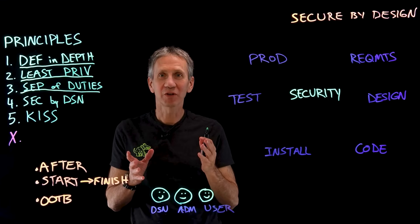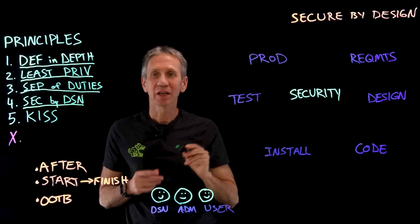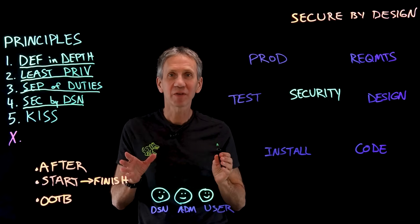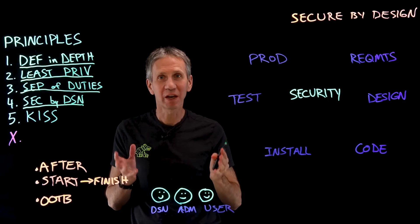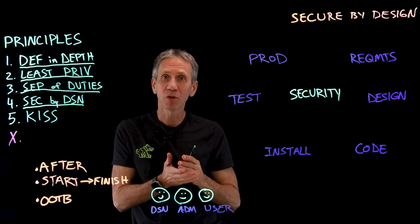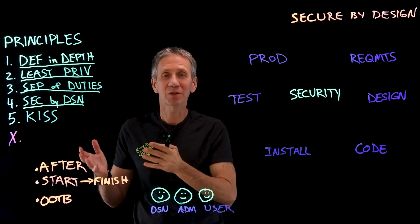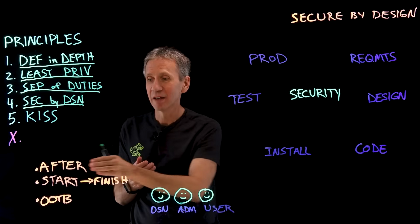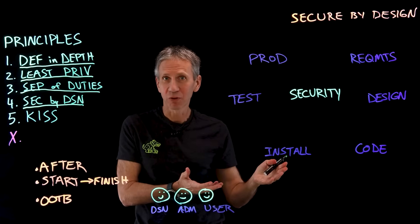The fourth security principle is secure by design — security shouldn't be an afterthought. Think of it this way: if you're designing a building in an earthquake zone, you want to make it able to withstand the pressure. You don't build the building and then afterwards go back and make it earthquake-proof. You want to do that from start to finish, all the way from design through completion.